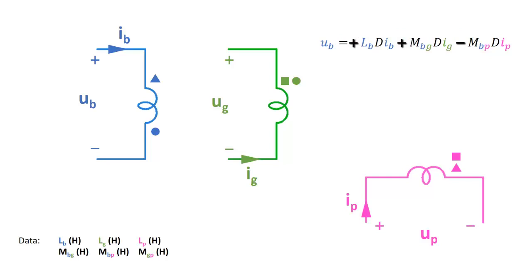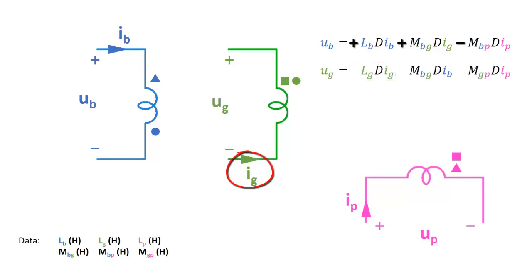Now please pause the video and try to write the proper equation for the green coil. Let's show the solution. In this case the first term of the green voltage will be the self-induction. You have to look at the green current and the green voltage. As you can see, the green current enters the coil by the minus sign, so in this case the first term is negative.